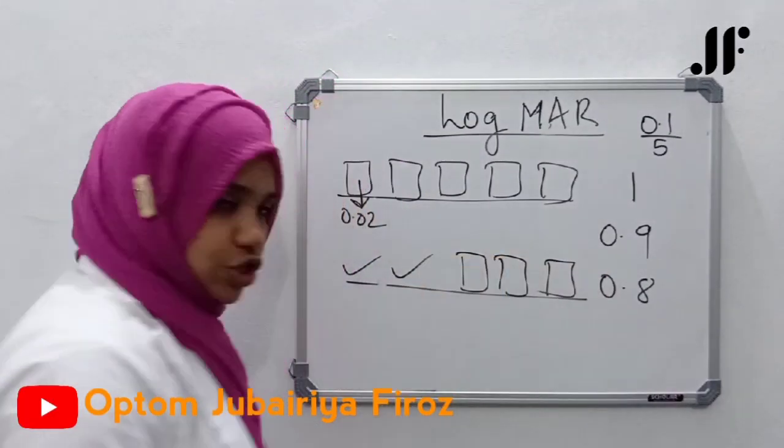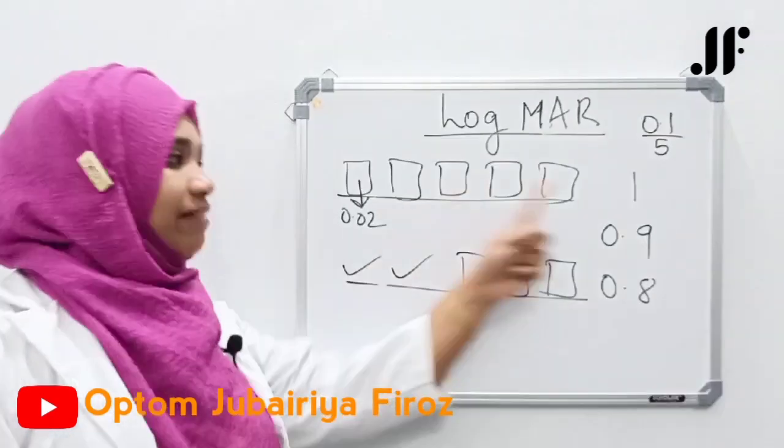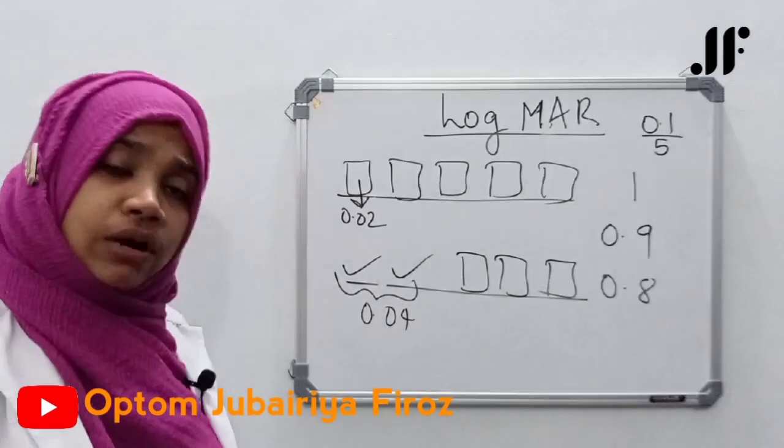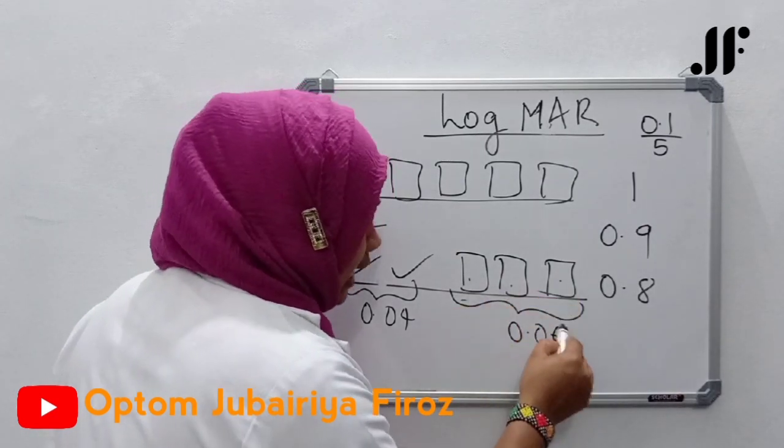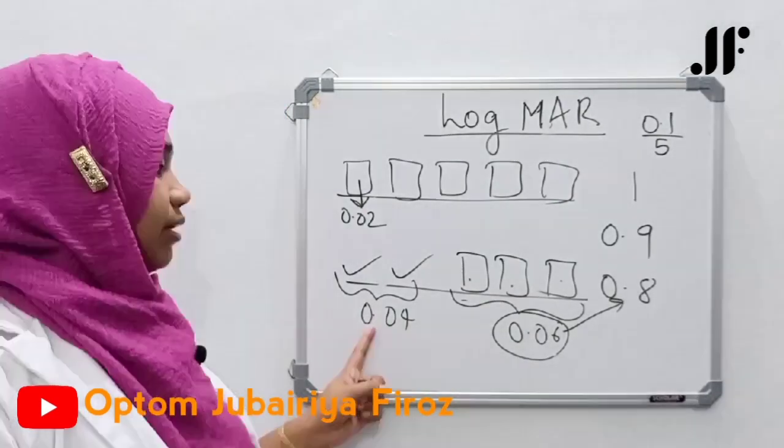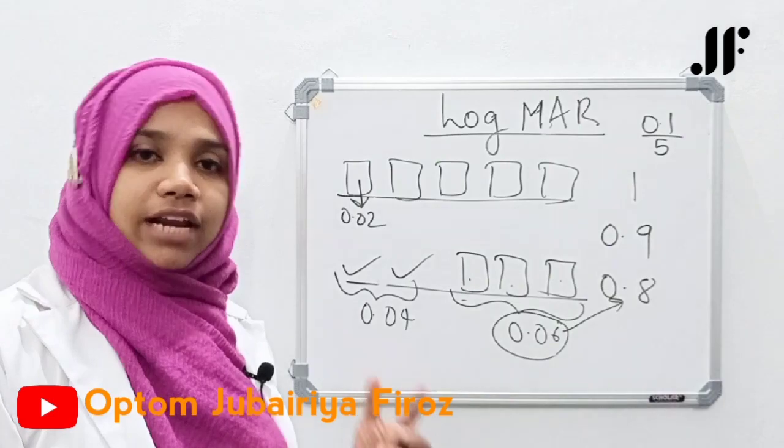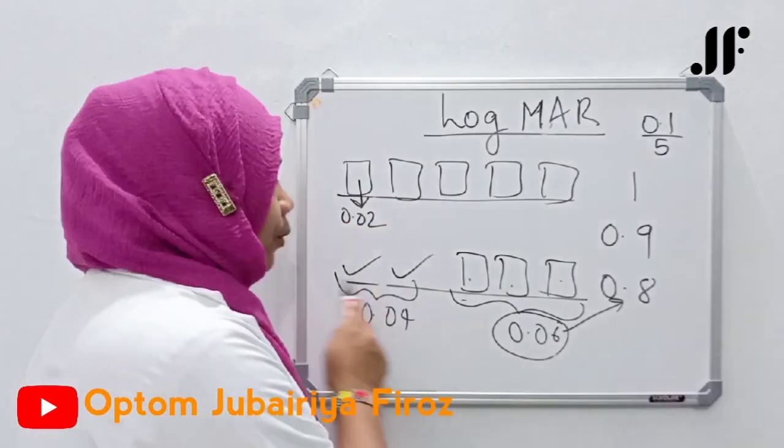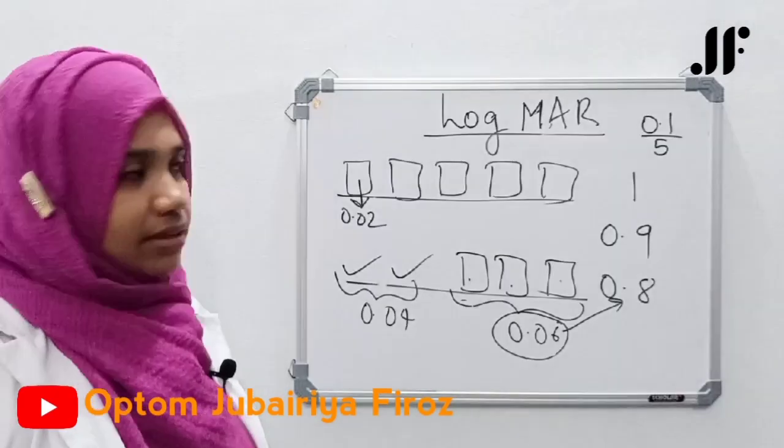If a patient reads 0.9 correctly, 0.04 missing - that means two letters missing. Or else you can also do missing letters in the value. Patient misses two letters in the value, 0.06. 0.02, 0.04, 0.06 - this missing value, same line add. 0.8 plus 0.06, it becomes 0.86. So either you can record LogMAR or you can see the formula minus factors, or you can see the decimal. For the reason one patient is missing, how many letters in the value, add in the same line.